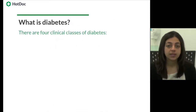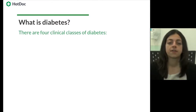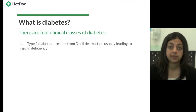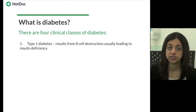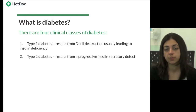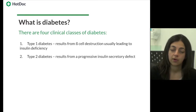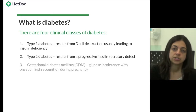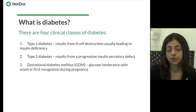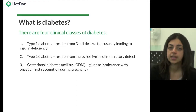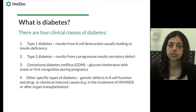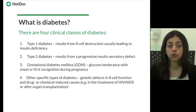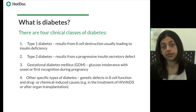What is diabetes? The term diabetes covers a group of disorders. There are four clinical classes: Type 1 diabetes, which results from beta cell destruction due to an autoimmune process usually leading to insulin deficiency; Type 2 diabetes, which results from a progressive insulin secretory defect on the background of insulin resistance; Gestational diabetes, which is any degree of glucose intolerance with onset or first recognition during pregnancy; and other specific types due to causes such as genetic defects in beta cell function or drug or chemical-induced causes such as in the treatment of HIV/AIDS or after organ transplantation.